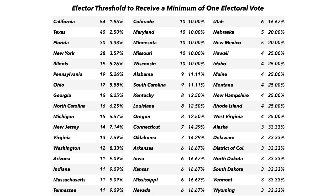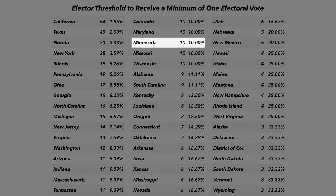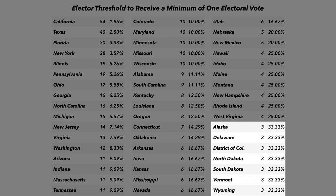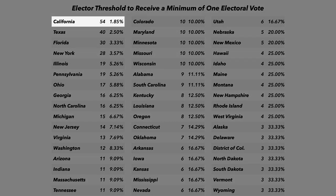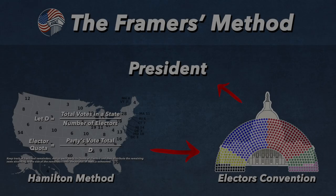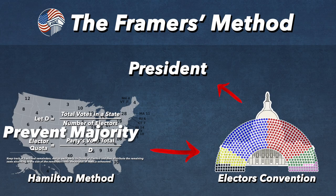Any party that wants to achieve an elector must win a minimum threshold. Under the Hamilton method, each state would have its own minimum threshold to award a party or candidate with an elector. To find a state's threshold, simply divide one elector by the number of electors available in the state. For Minnesota, one elector divided by ten electors gives a 10% threshold. The smallest states with only three electors have a threshold of 33%. California with 54 electors has a threshold of 1.85%, and Texas with 40 electors requires 2.5% to achieve a minimum of one elector. The larger the state, the more likely they will have more political parties achieve electoral votes. The main point of using the Hamilton method is to prevent a majority at an electors' convention, which will force deliberation on the electors when choosing the next president.